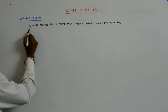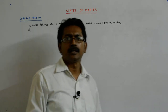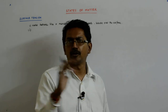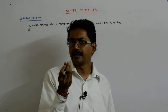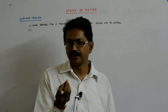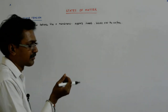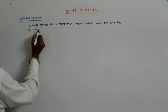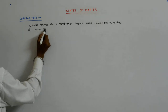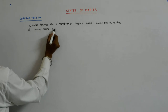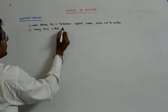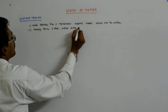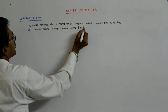We also see other phenomena: certain fluids spread on a surface, while things like mercury form into a droplet. So mercury forms a drop while some other fluids spread on a surface.